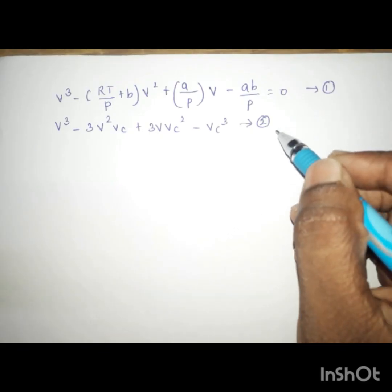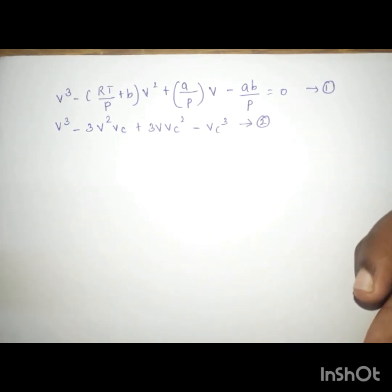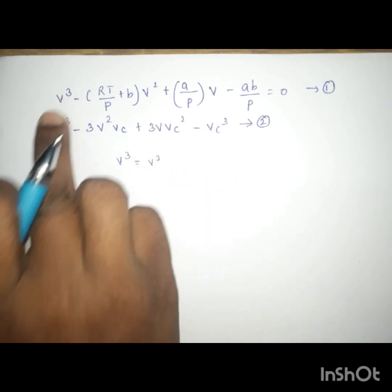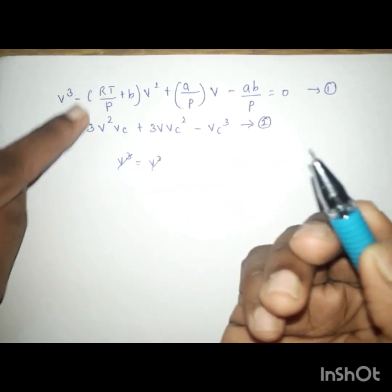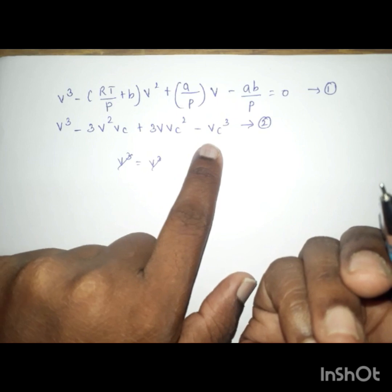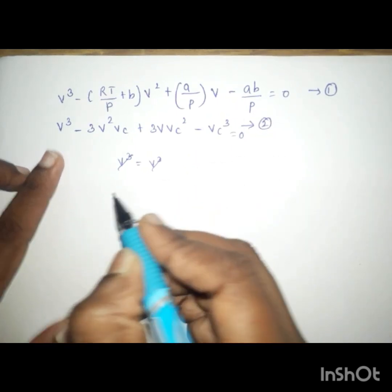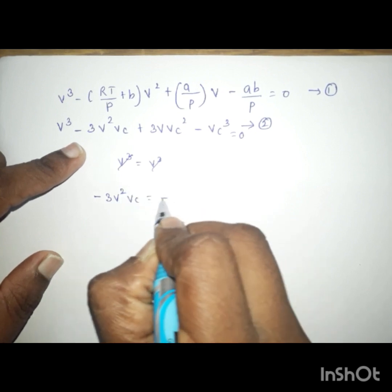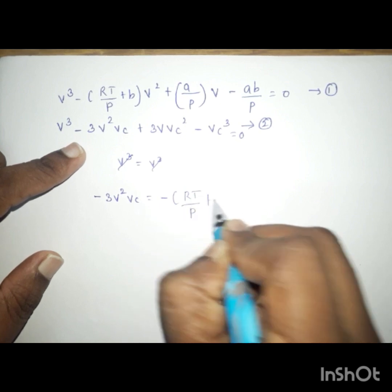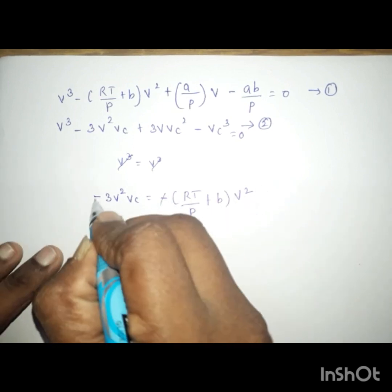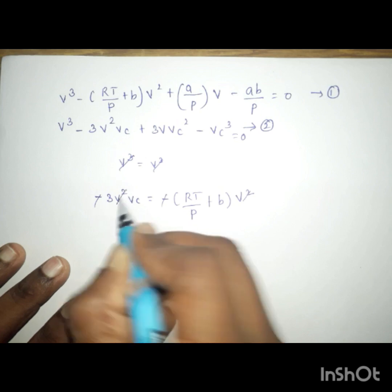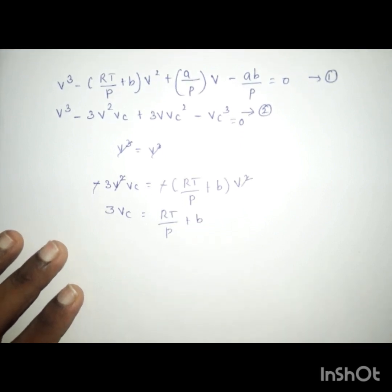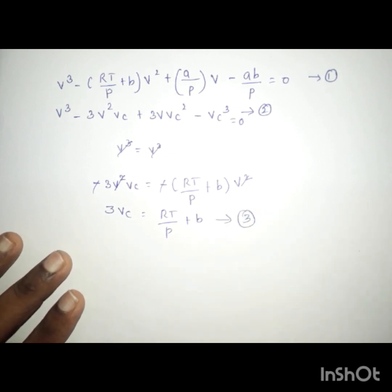In these two equations we compare coefficients of the critical constants Vc, Pc, Tc. The first coefficient: Vc³ equals Vc³, so those cancel. For the second term, minus 3Vc equals minus RT/P plus b. Rearranging: 3bc equals RT/P plus b. This is equation 3.